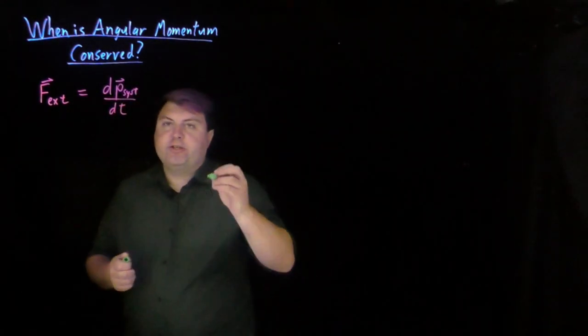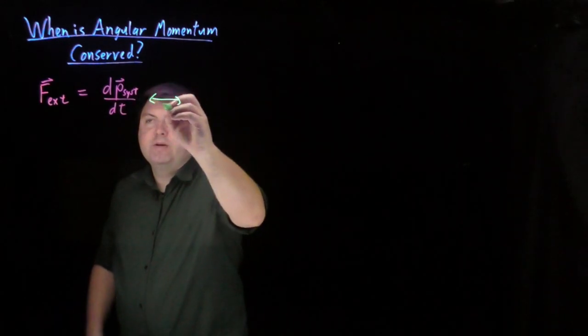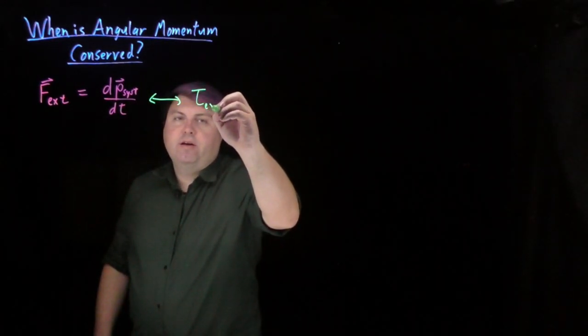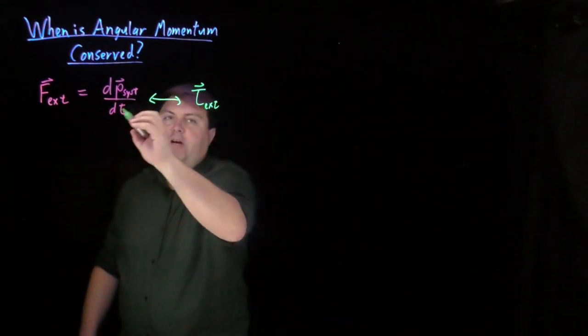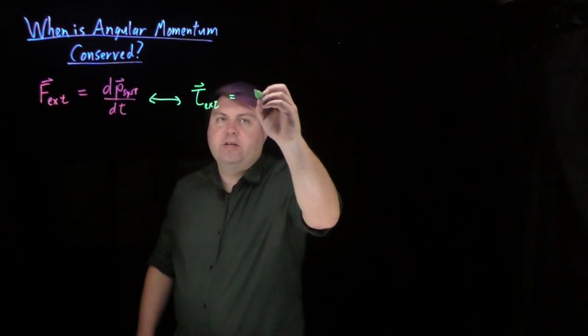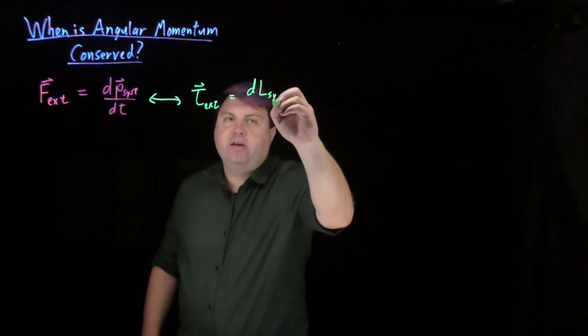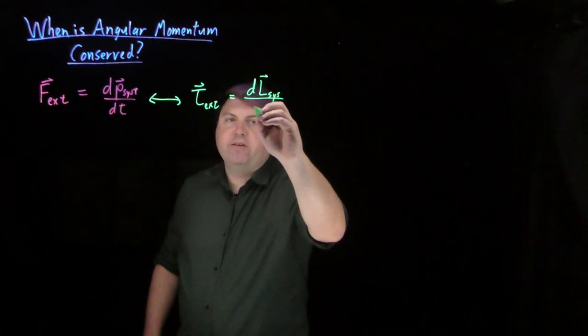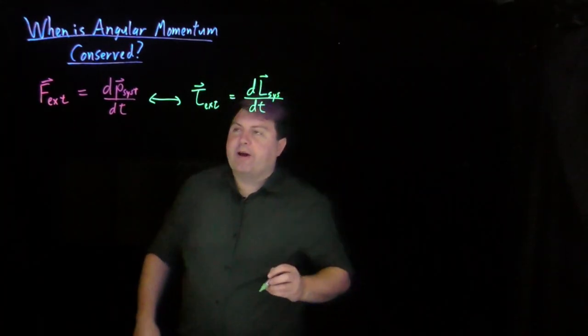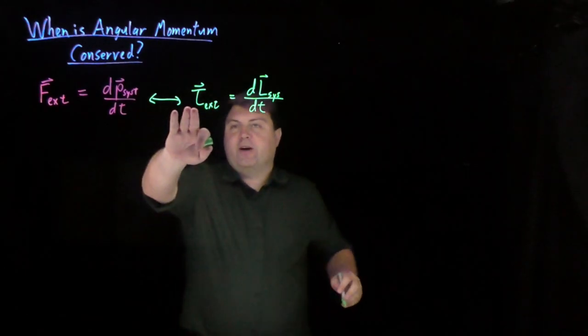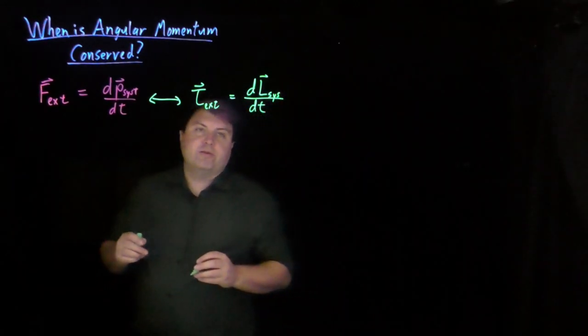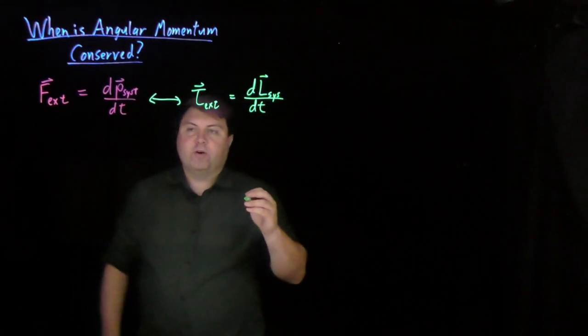And we have a similar relationship for angular momentum where we have the external torque, and this is the sum of all the external torques, is equal to the change in angular momentum of the system. We're using L for angular momentum because we've run out of a lot of other letters. So the torque external is equal to the change in angular momentum of the system over time.